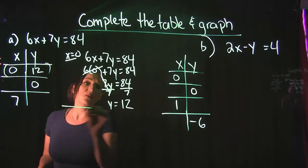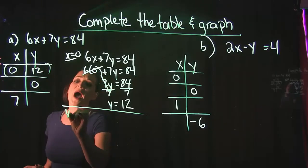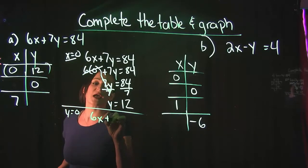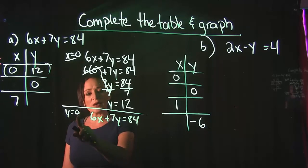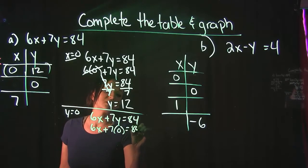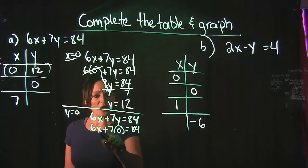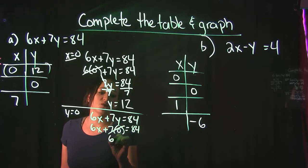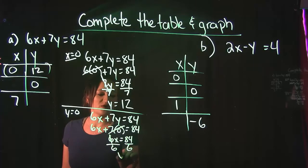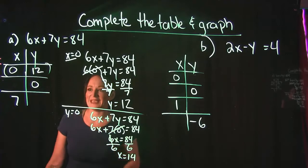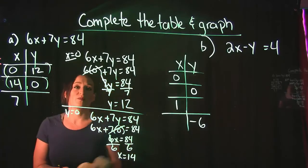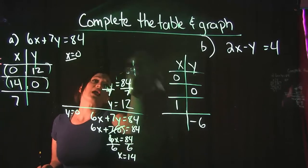Now we're given that Y is equal to 0. Taking the same equation 6x + 7y = 84, we plug in 0 for Y. Simplifying: 7 times 0 is 0, leaving us with 6x = 84. Dividing both sides by the coefficient gives us X = 14. So when Y is 0, X is 14 — that's our second ordered pair. Two points are enough to graph any line, but our table gives us a third.